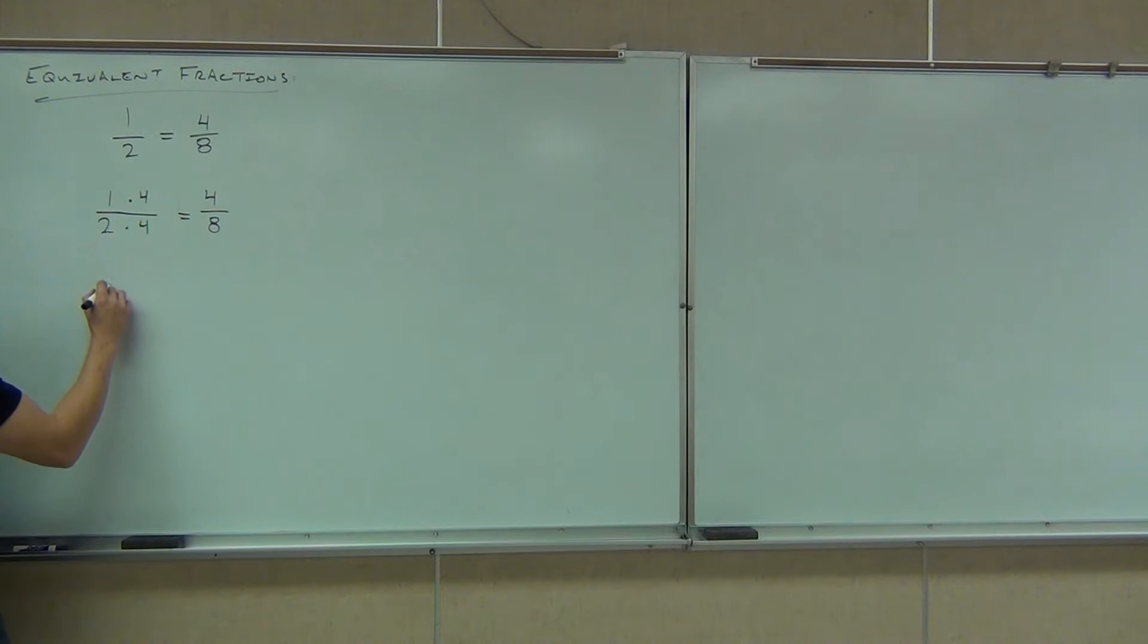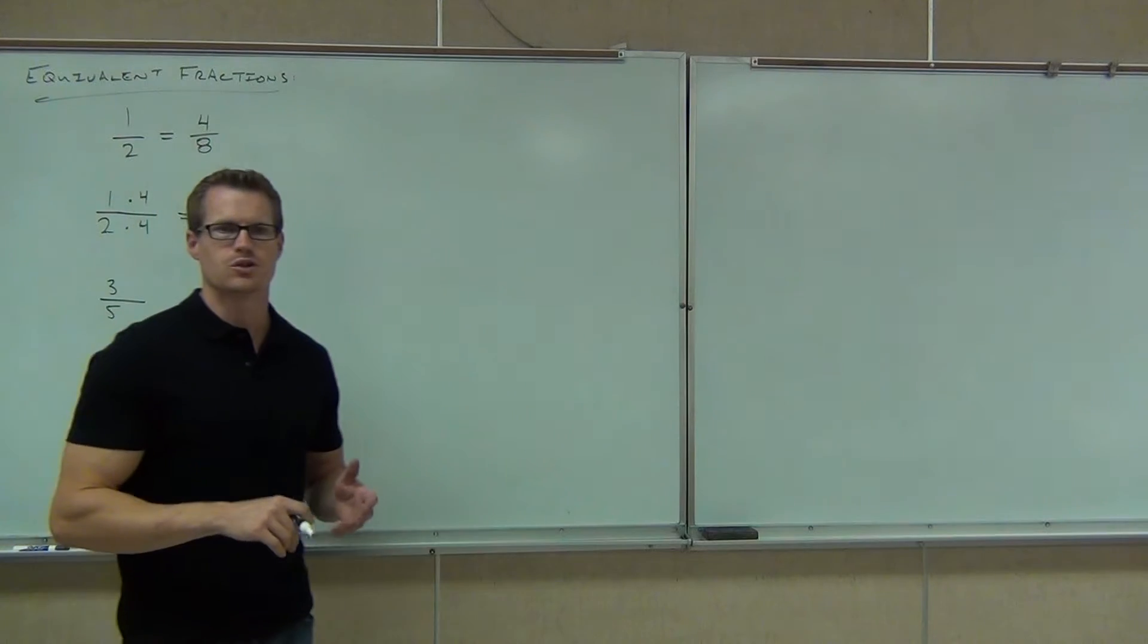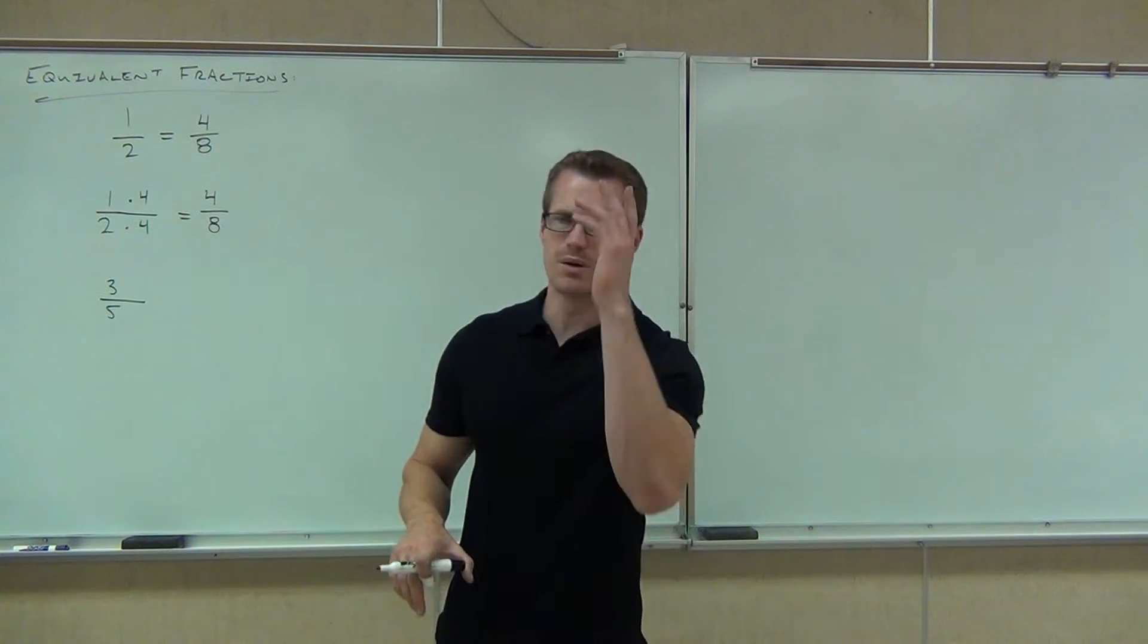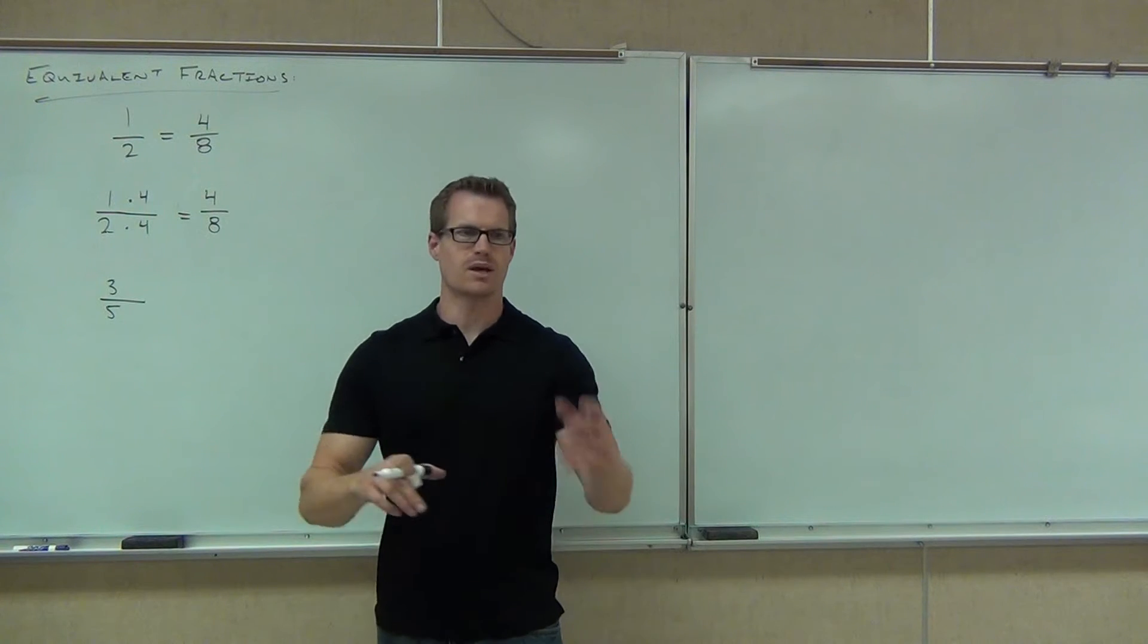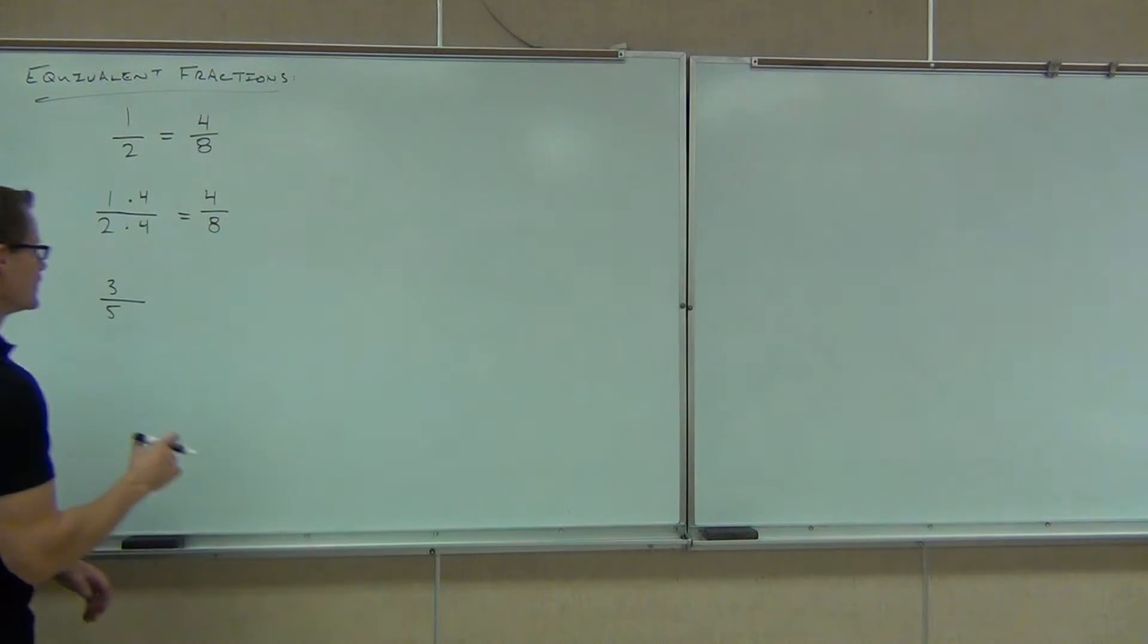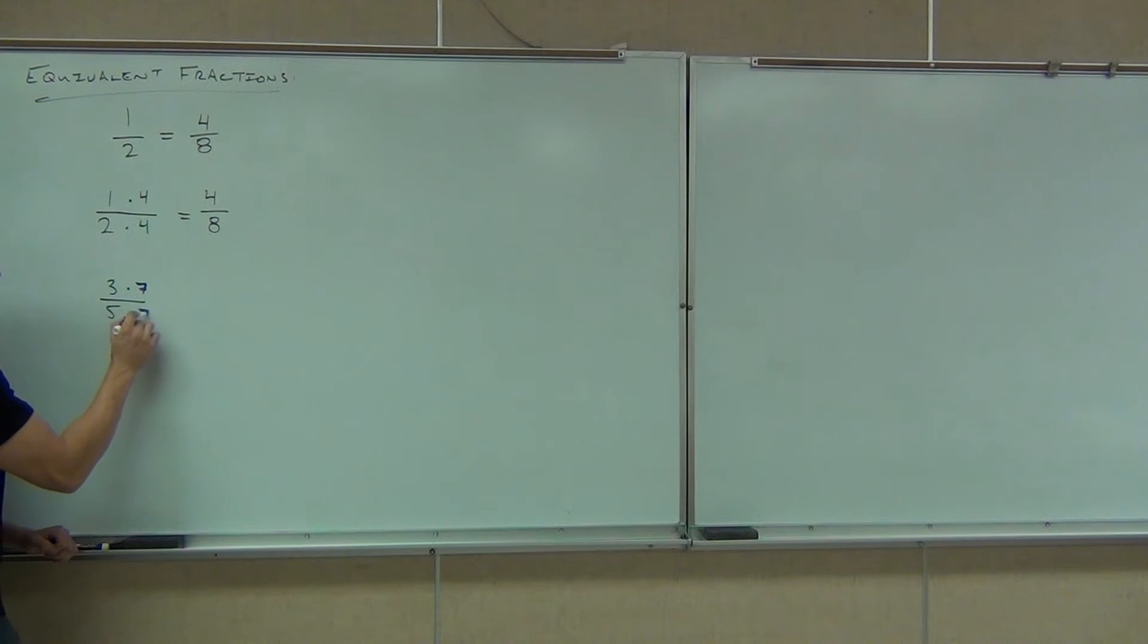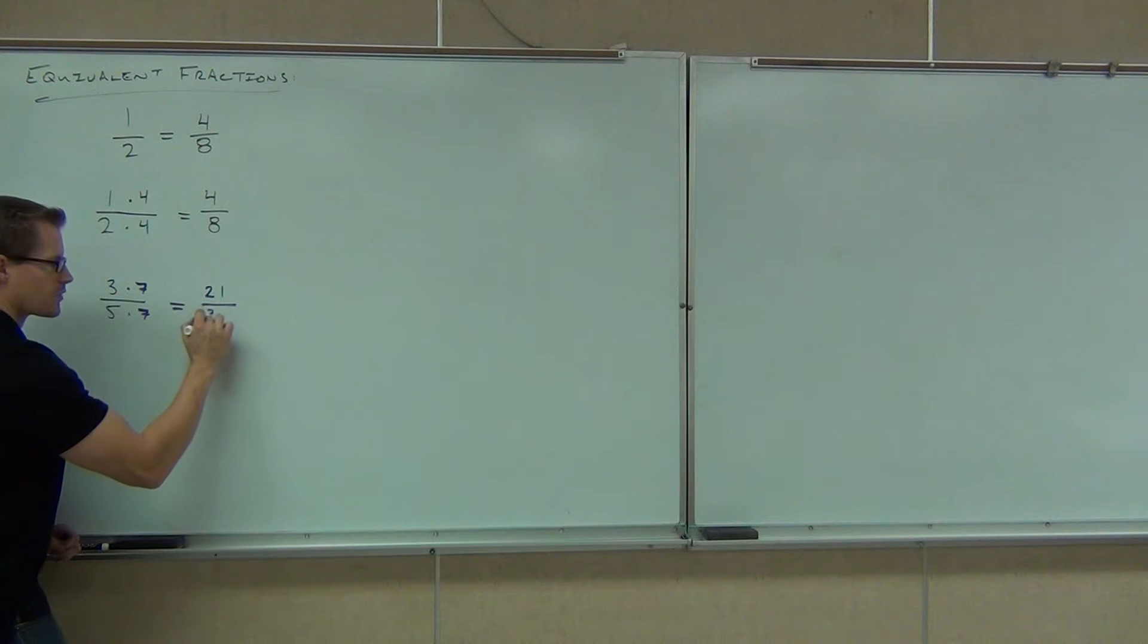I can give you another case. Let's take 3 fifths and we're going to make up an equivalent fraction. Give me some random number. 2. Bigger than 2. 5, 7. Okay, I like 7. 2 people said 7. If I take and I multiply the top of our fraction by 7 and the bottom of our fraction by 7, I'm going to get 21 over 35.